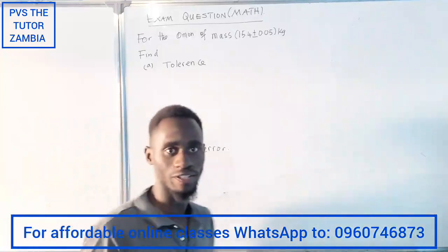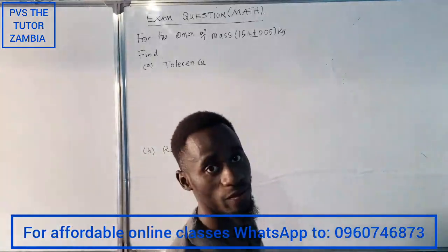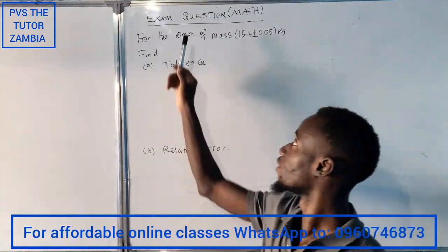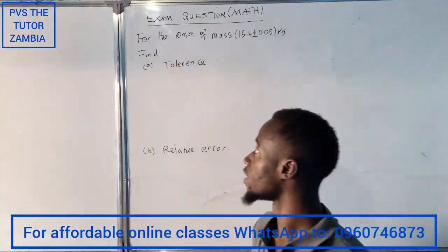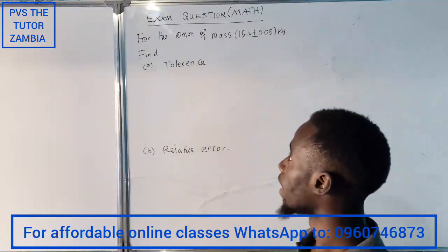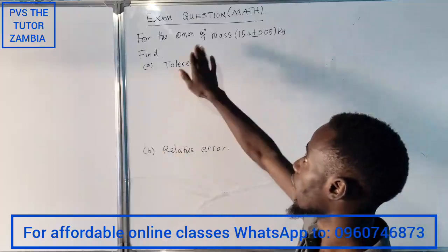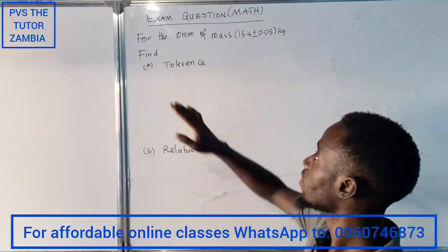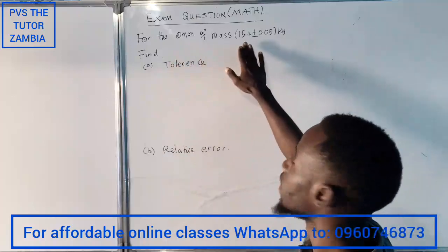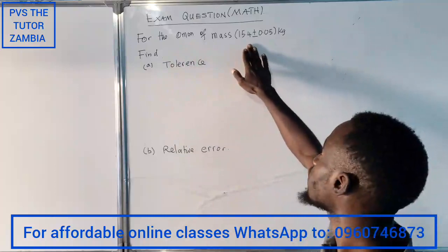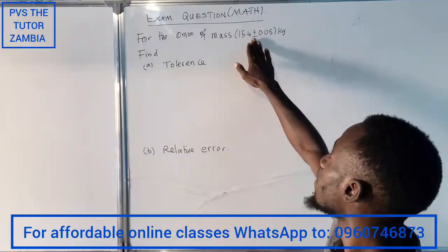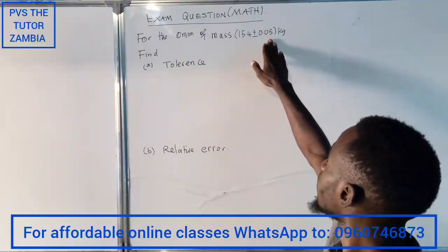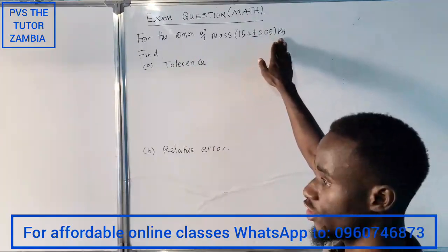Welcome to another video. This is PBS the Tutor. I've got an exam question — it's O'Level mathematics — and it's about errors. The question says: for an object of mass 15.4 plus or minus 0.05 kg, find the tolerance and find the relative error.